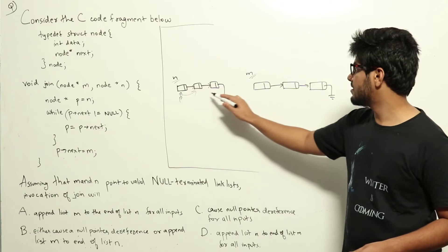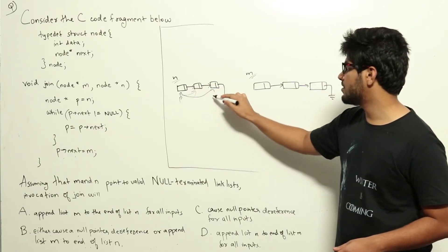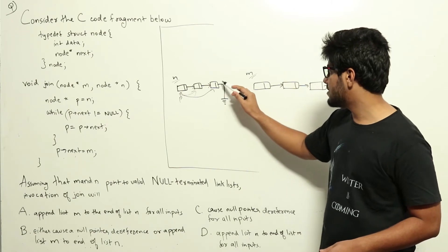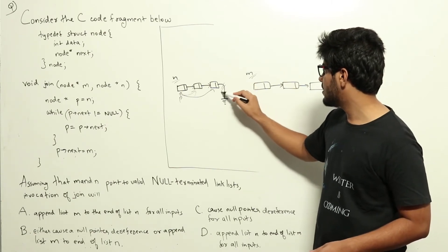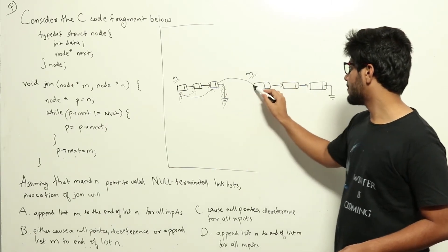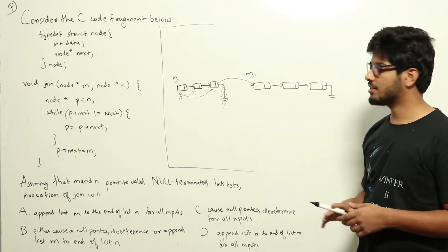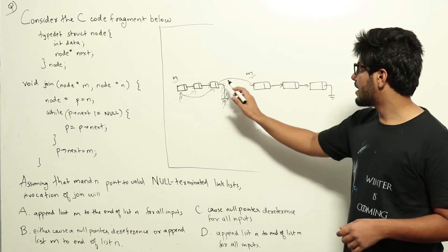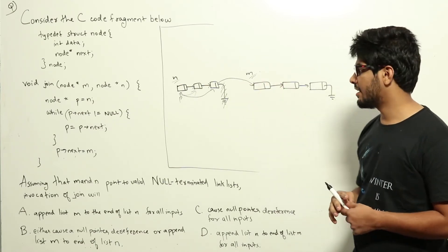So, we will be traversing P like this. P will move to this. P will move to this. At this point we will see that the next is null. And what we will do is we will change P next from null to M. We will be pointing it to the first node of M. So, clearly what we are doing here is we are appending list M to the end of list N.